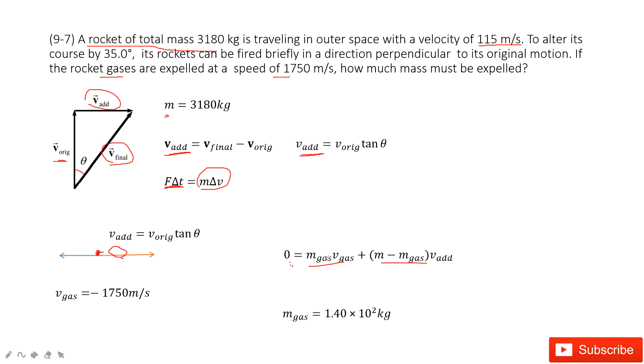And so the addition of this momentum should equal zero. And you can see the mass of the gas is what we need to find. The velocity for the gas is 1750 meters per second. But please pay attention. Because this gas is pulled out by the rocket, so we give it a negative sign, moving in the negative x direction. And then the velocity added is given. It is V_original times tangent theta. So with this equation, we can solve and get the final answer about the mass of the gas. Thank you.